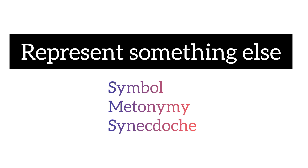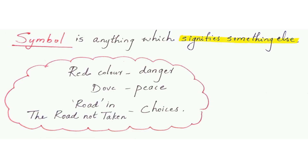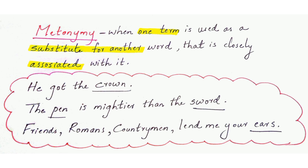The next category includes figures of speech that represent or stand for something else: symbol, metonymy, and synecdoche. A symbol is anything which signifies something else — waving your hand is a symbol of saying bye, a red color symbolizes danger, a dove shows peace. In the poem 'The Road Not Taken,' the road symbolizes the choices the poet could have taken. Metonymy is when one term is used as a substitute for another word that is closely associated with it.